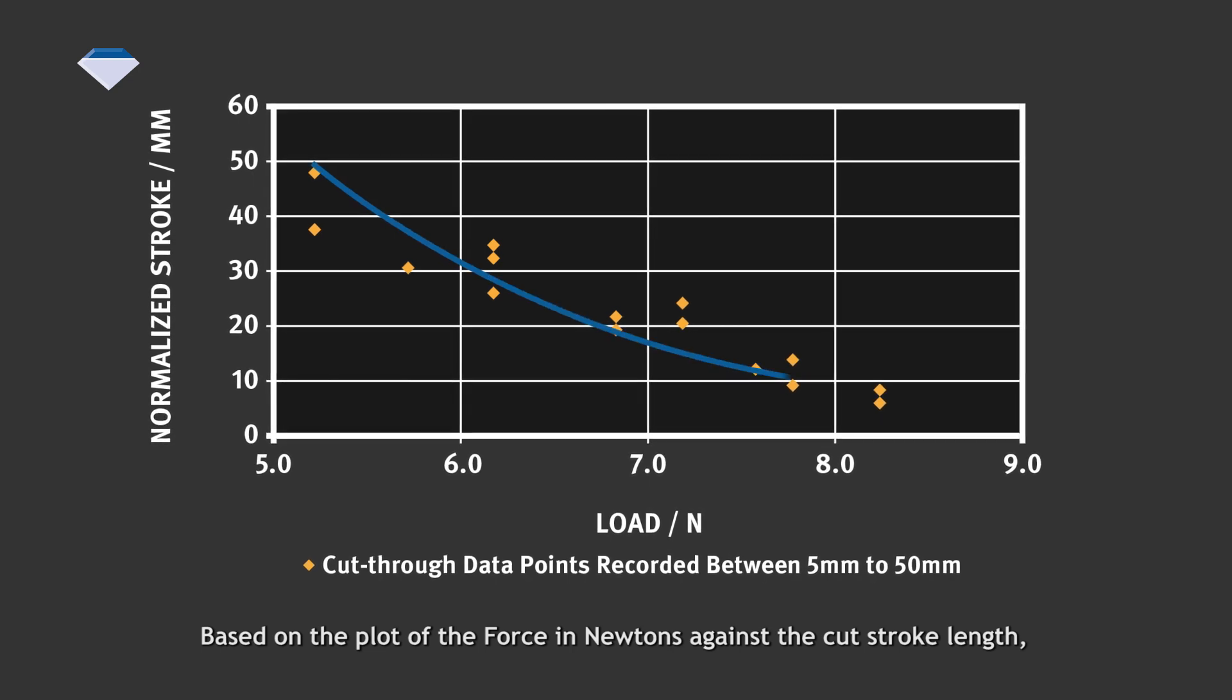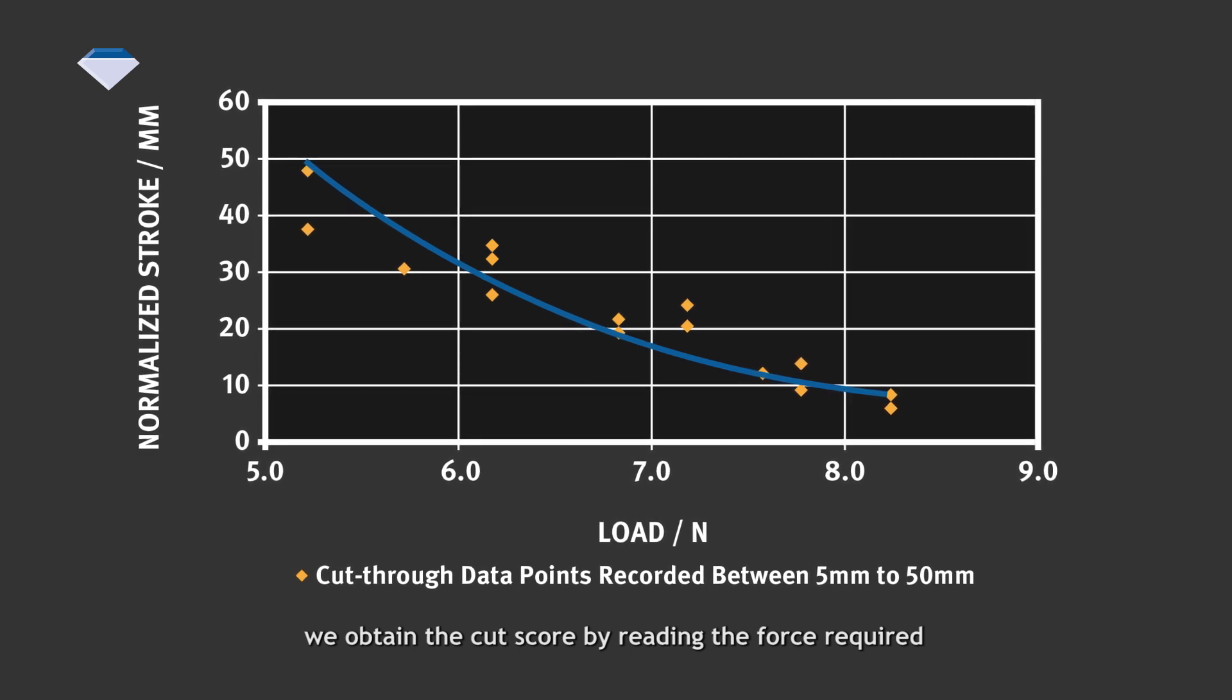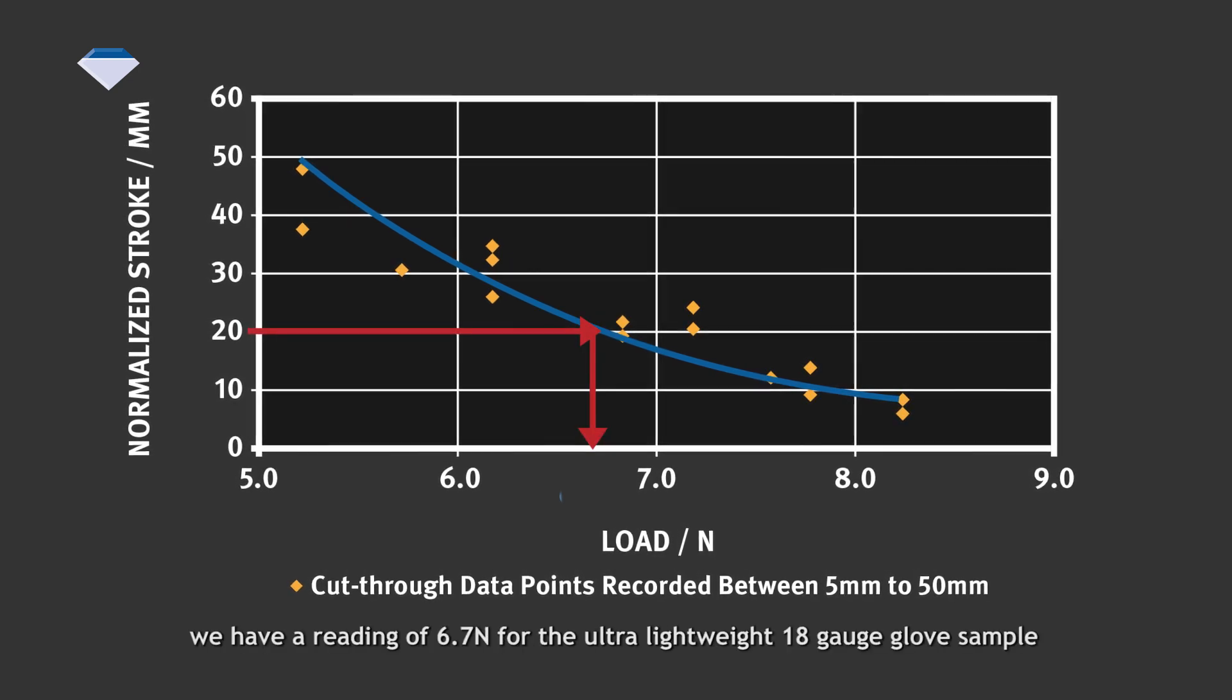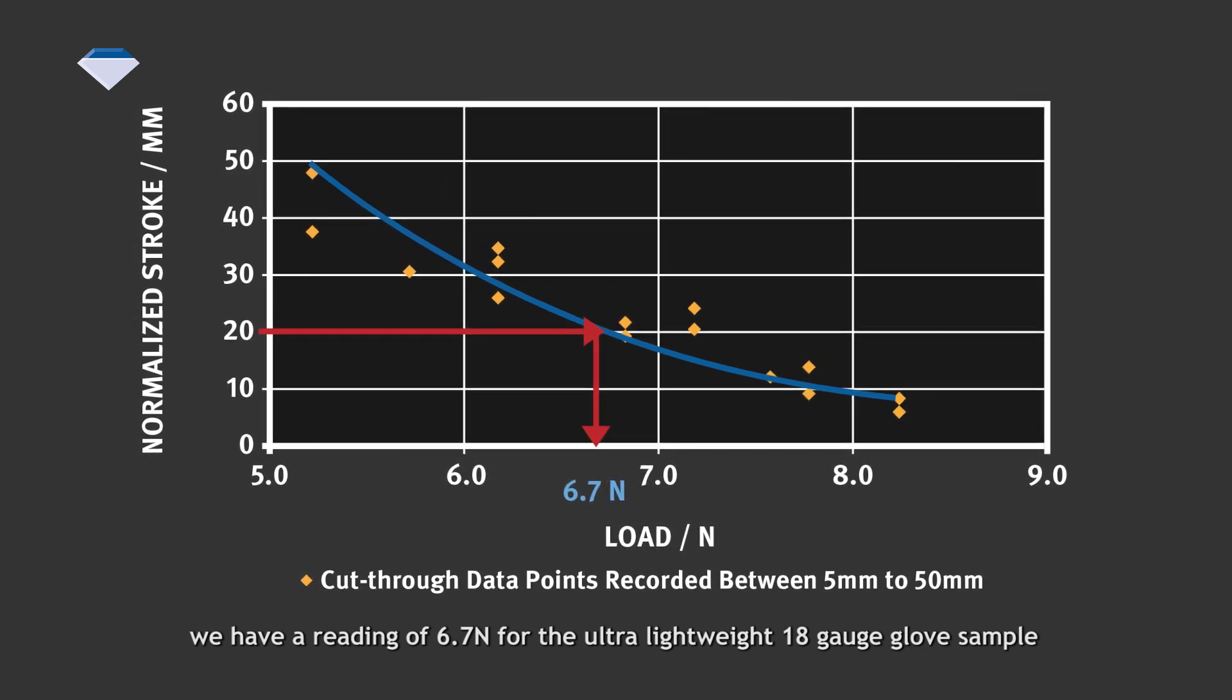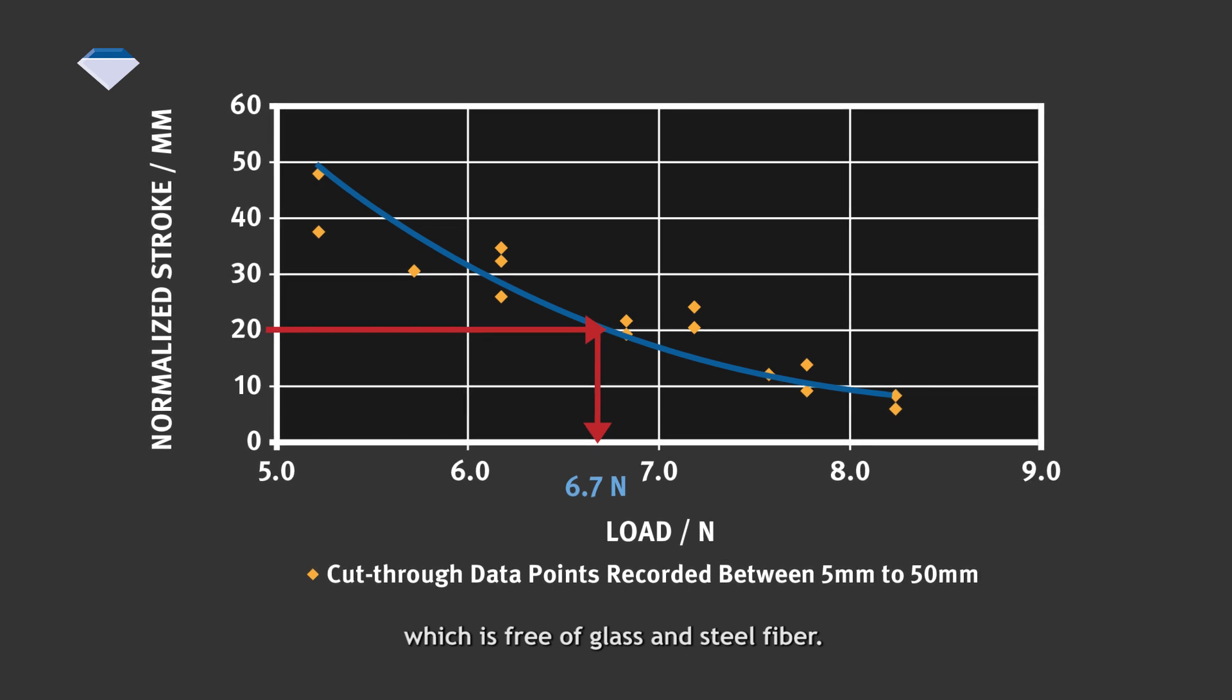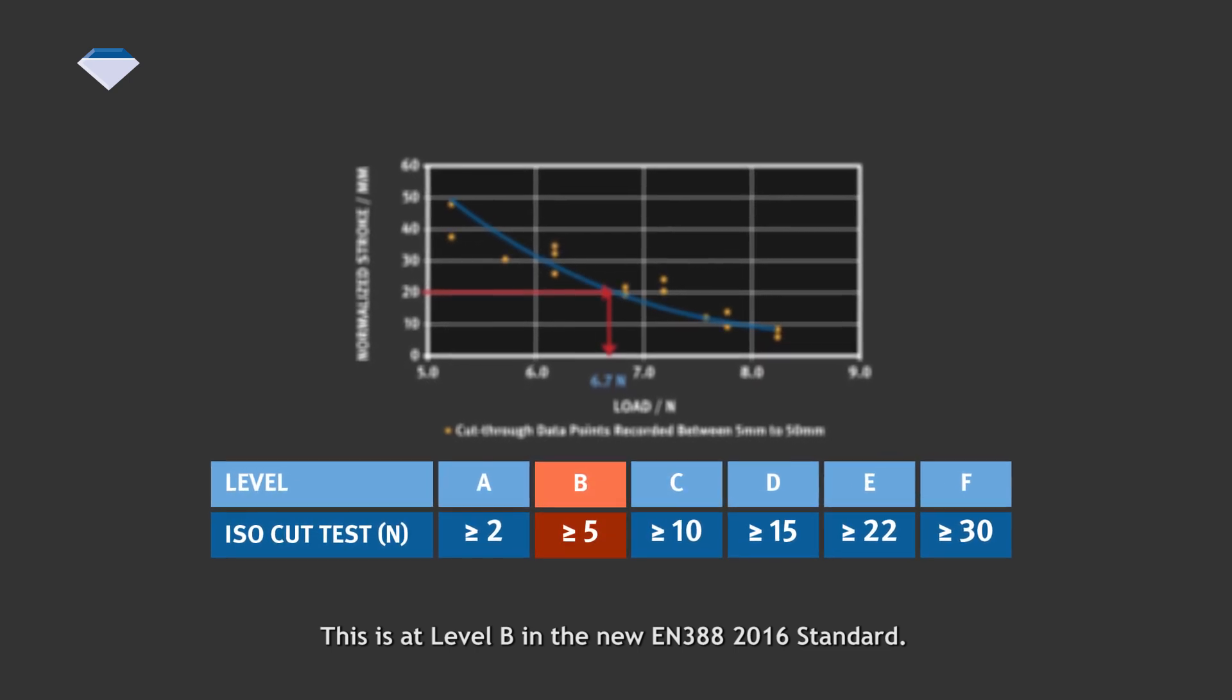Based on the plot of the force in newtons against the cut stroke length, we obtain the cut score by reading the force required to produce a cut stroke length of 20mm. Based on the plot shown, we have a reading of 6.7N for the ultra-lightweight 18-gauge glove sample made with Dyneema Diamond technology 220 D-TEX fiber which is free of glass and steel fiber. This is at level B in the new EN388 2016 standard.